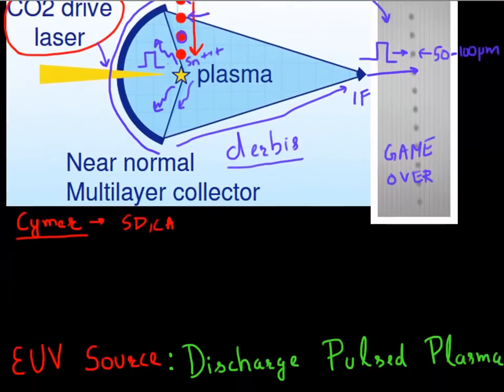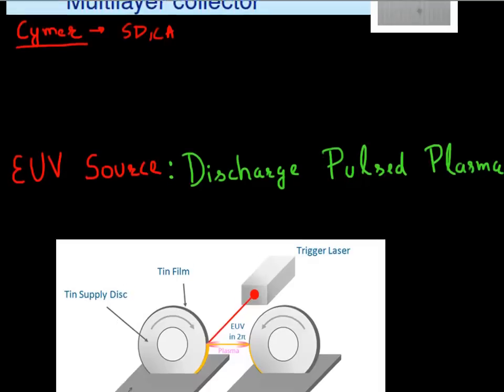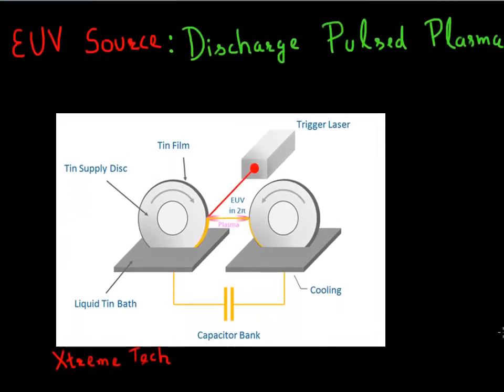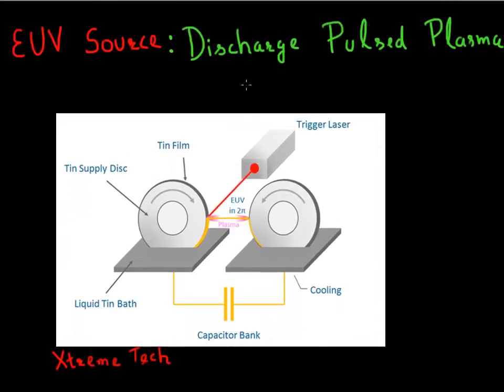The other way to generate this EUV photon is this other competing technology, which is also a plasma, but generated not by laser but instead using a discharge pulse.